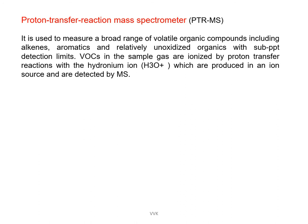Proton transfer reaction mass spectrometry (PTR-MS) is used to measure a broad range of VOCs including alkenes, aromatics, and relatively unoxidized organics with sub-ppt detection limits. VOCs in the sample gas are ionized by proton transfer reactions with hydronium ions produced in an ion source. All these techniques are very costly, require trained personnel, and calibration of all instruments is very important. All analyzers should be kept under controlled conditions.